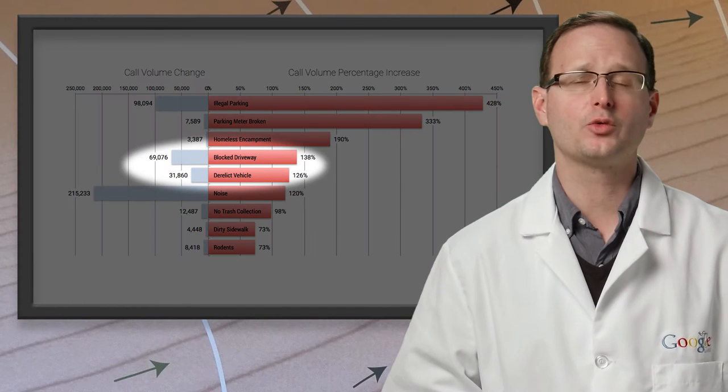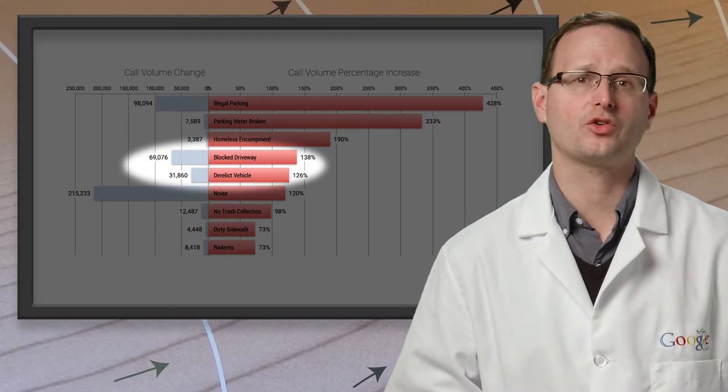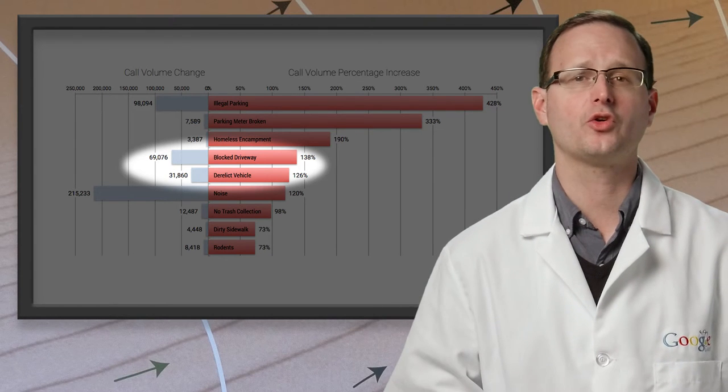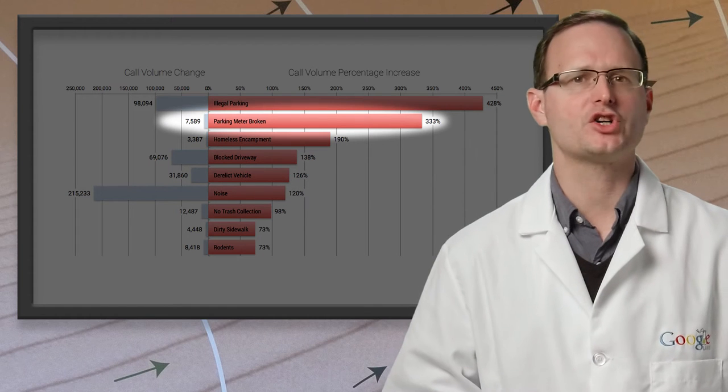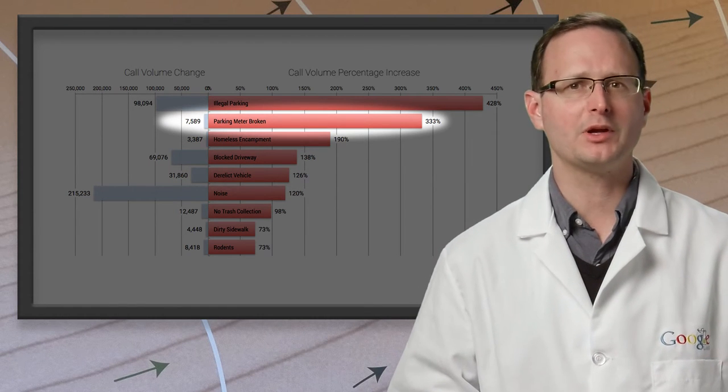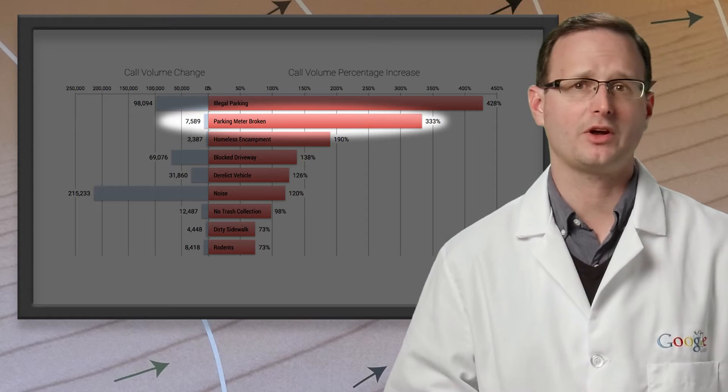Blocked driveways and derelict vehicles represent another 100,000 extra calls, so it's clear that people just don't know where to leave their cars. Note that there is also a sharp increase in broken parking meter complaints, so some people, at least, are trying to do the right thing.